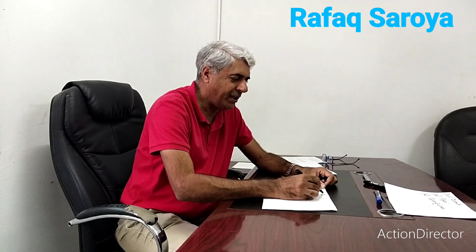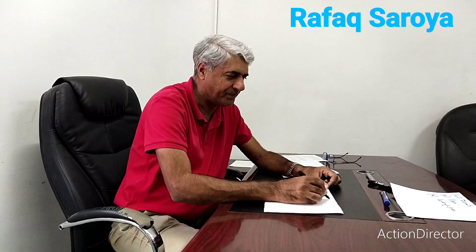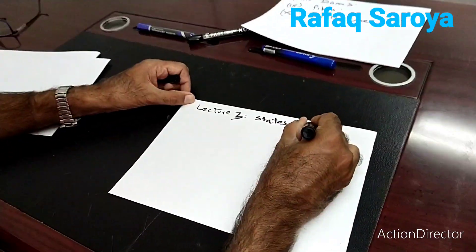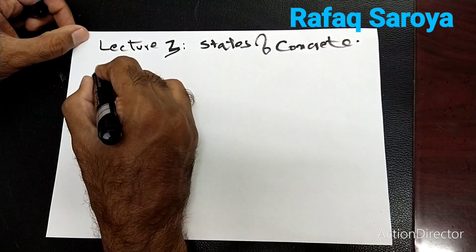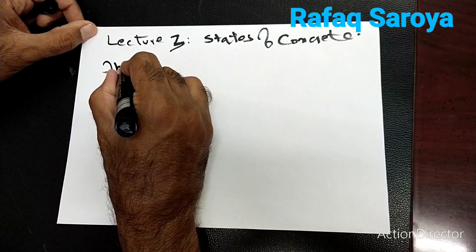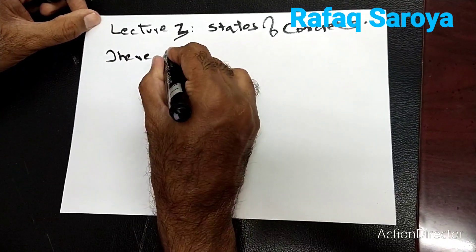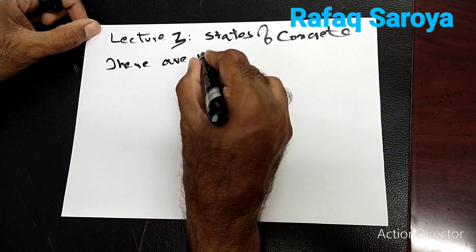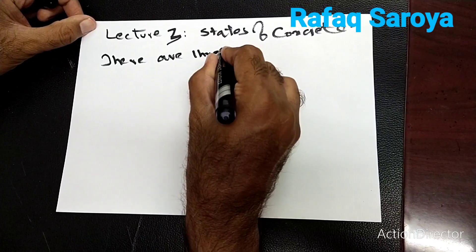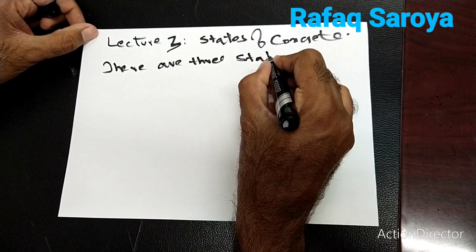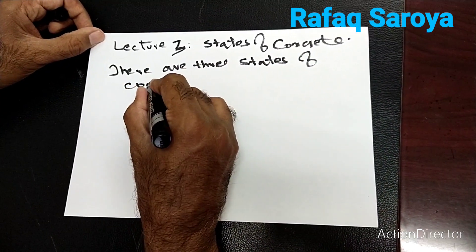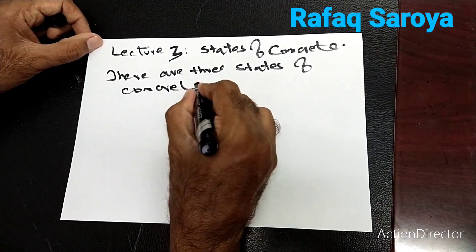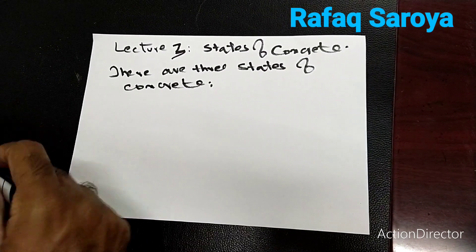Next is lecture number three about the states of concrete. There are three states of concrete. I will just briefly cover them — I will not go into too much detail.